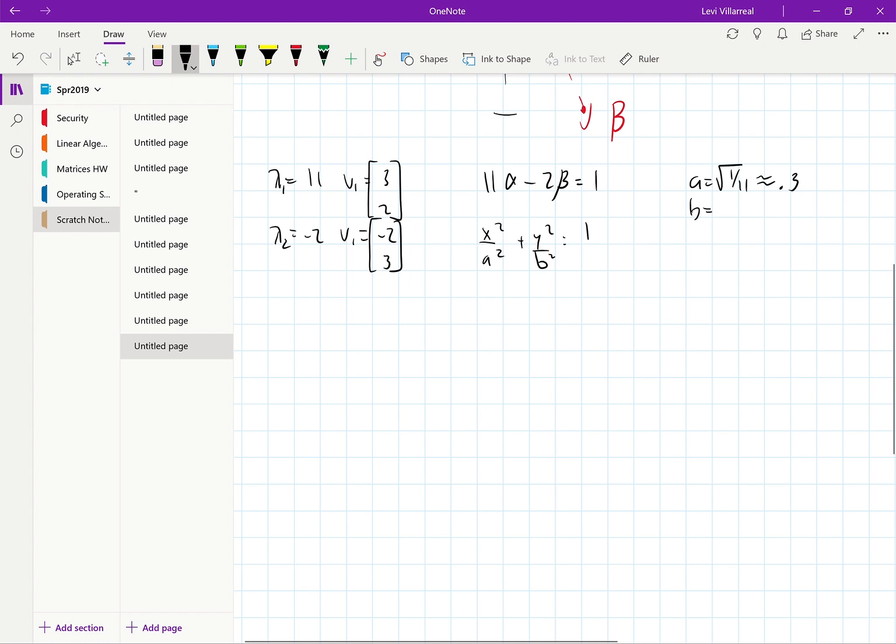and notice that our beta is negative right here. So we want to put that negative on the outside of here. So negative square root 1 half, and that's about negative 0.7.